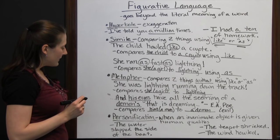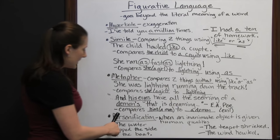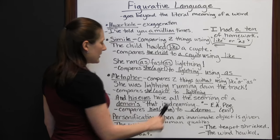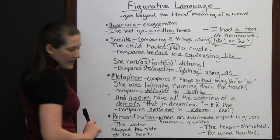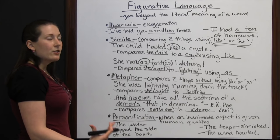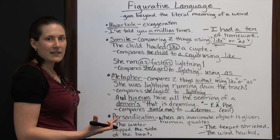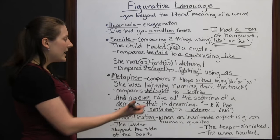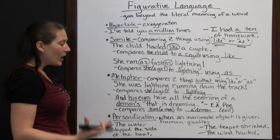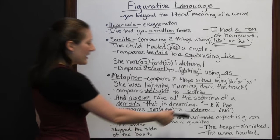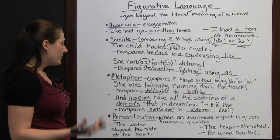The last piece of figurative language we'll discuss is personification, which is when an inanimate object is given human qualities — you are personifying it, making it do something a person would do even though it's not capable of those things. Inanimate objects are things that are not alive: a chair, a teapot, the wind, water.